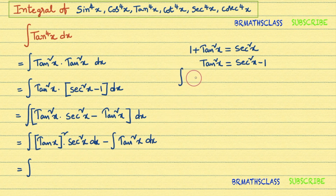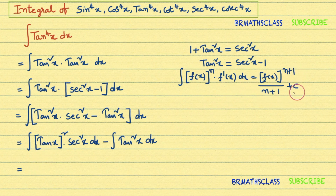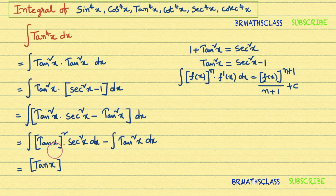The derivative of tan x is sec²x, so the first integral is of the substitution form. Using the formula for integration by substitution, f(x)^(n+1) / (n+1) + C, we get (tan x)^(2+1) / (2+1) = tan³x / 3.